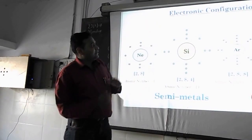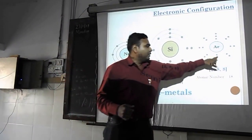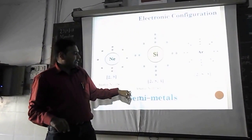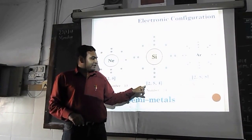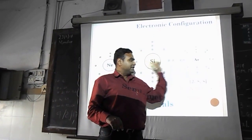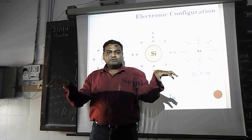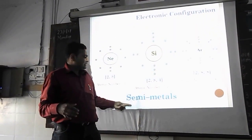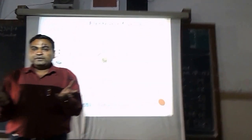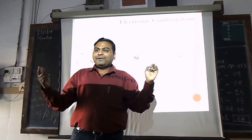Now let's look at the electronic configuration of silicon, alongside neon and argon. Neon and argon are stable because their octets are filled with 8 electrons. Silicon has atomic number 14 and electronic configuration 2-8-4. With 4 electrons in the outermost orbit, it has to either gain 4 or lose 4 electrons — both options require the same number. Because of this equal tendency to gain or lose electrons, silicon has a property called semi-metal or metalloid.